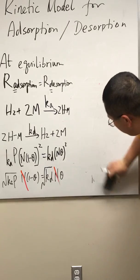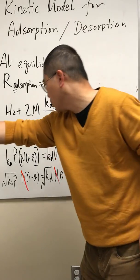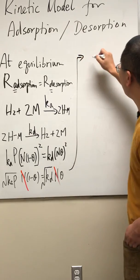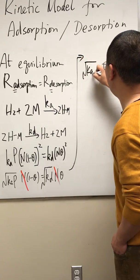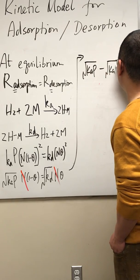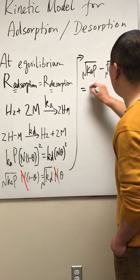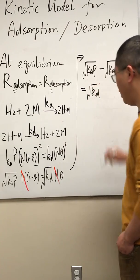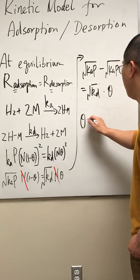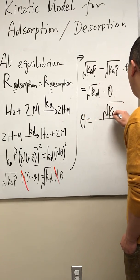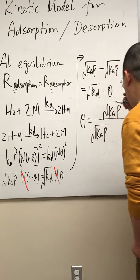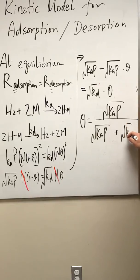And we have a nice equation for theta. Theta can be expressed as a function of p. So we go from here to here, we get the square root of ka times p minus square root of ka times p times theta is equal to kd square root of kd times theta. And theta is simply square root of ka times p over square root of ka times p plus kd.